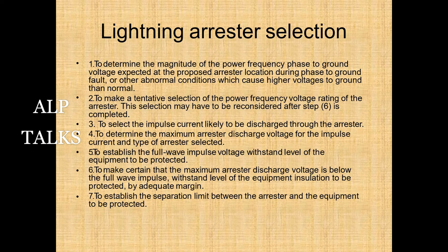Lightning arrester selection steps: determine the magnitude of power frequency phase-to-ground voltage expected at the arrester location during phase-to-ground faults or other abnormal conditions; make a tentative selection of the power frequency voltage rating; select the impulse current likely to discharge through the arrester; determine maximum arrester discharge voltage for the impulse current and type selected; establish the full-wave impulse voltage withstand level (BIL) of the equipment to be protected; verify that the maximum arrester discharge voltage is below BIL by an adequate margin; and establish the separation limit between the arrester and the equipment.